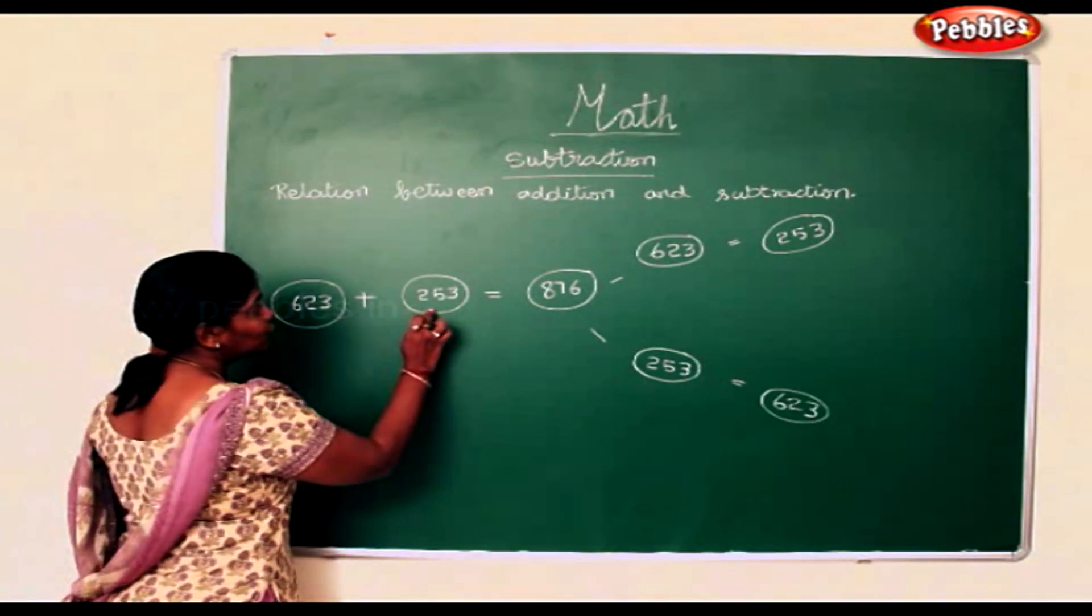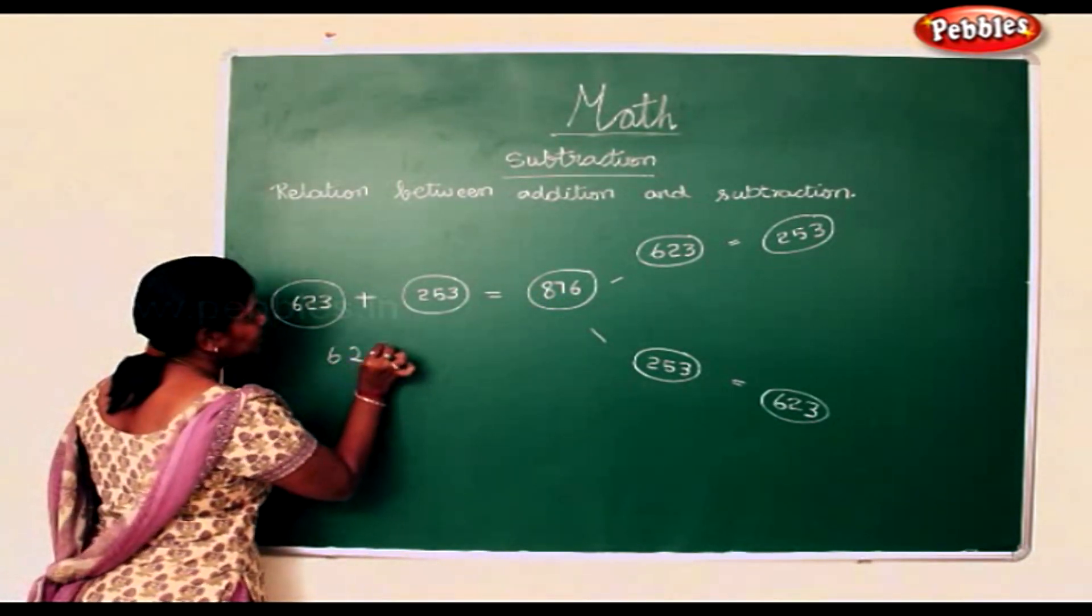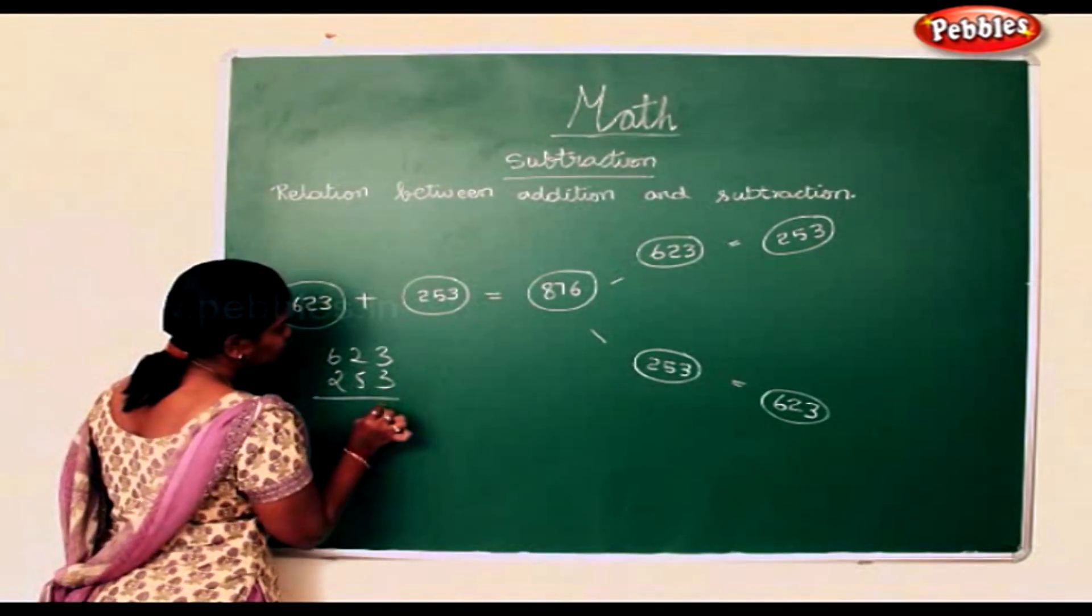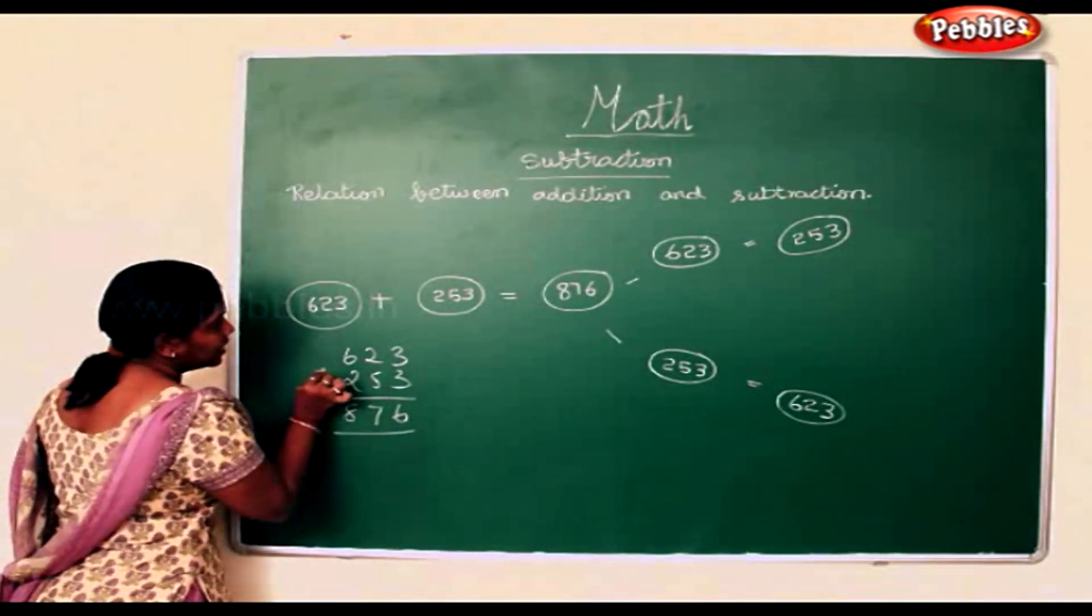623 add 253 gives 876. If you add these both, you will get 876.